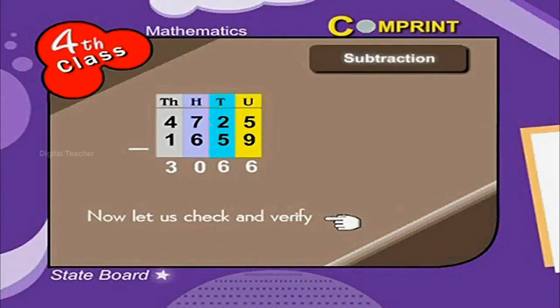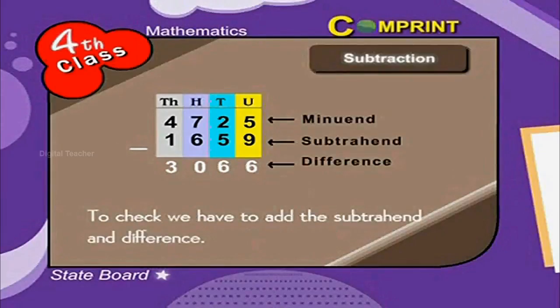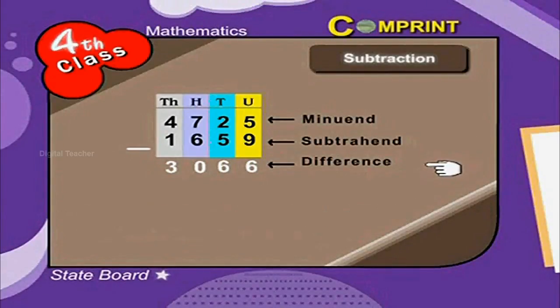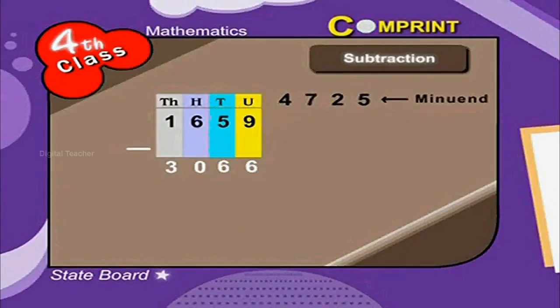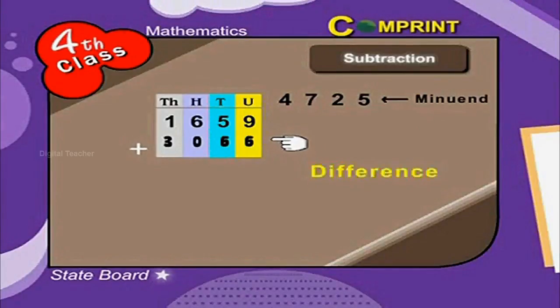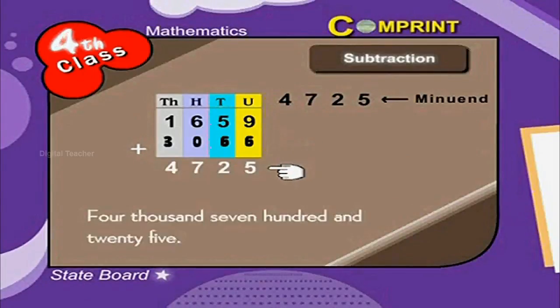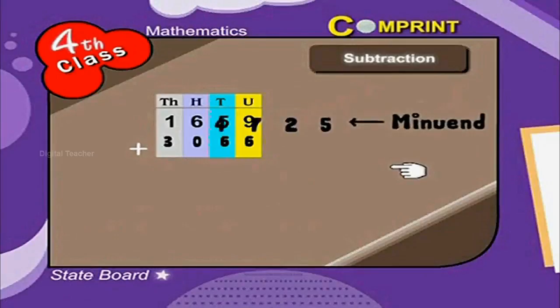Now, let us check and verify. To check, we have to add the subtraction and difference. Look at the example. 1659 is called as subtraction. Plus 3066 which is difference. Now, add these numbers. We get 4725 which is my minuend.